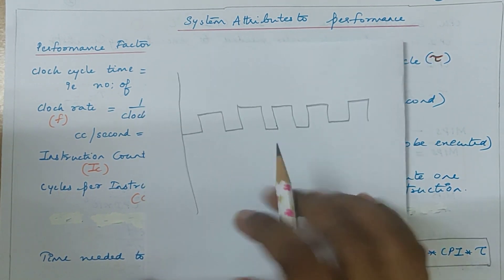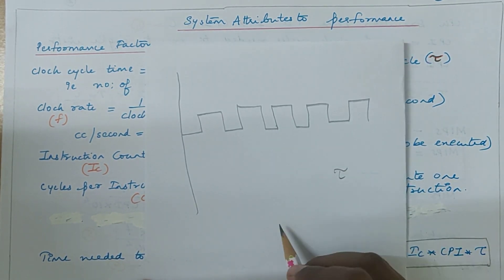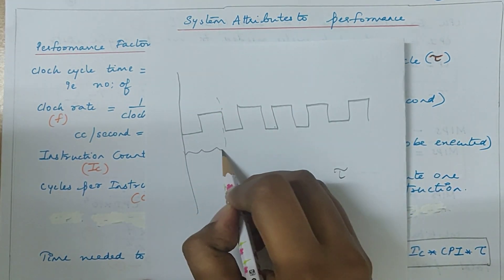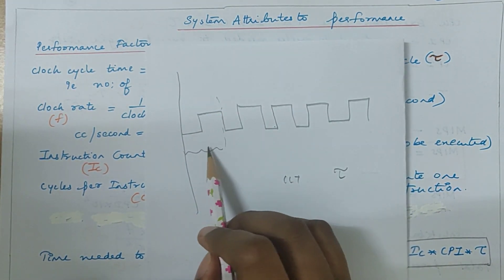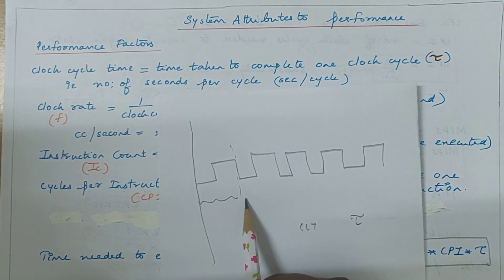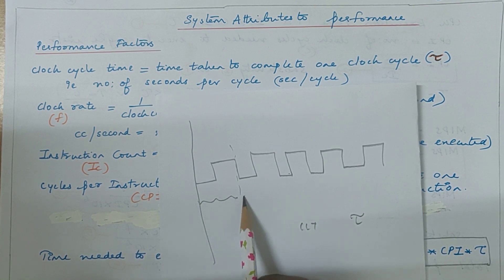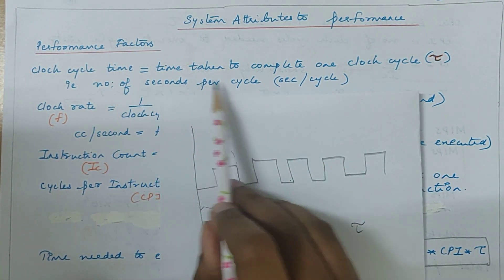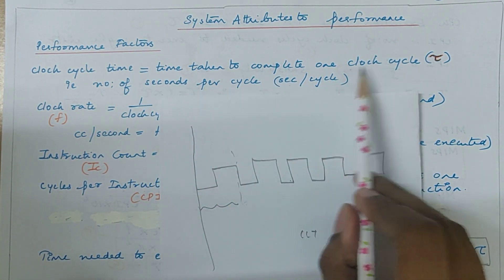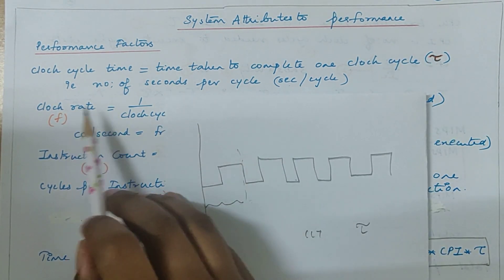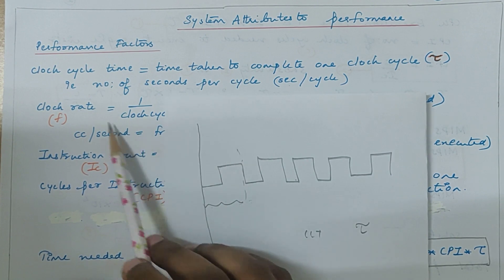You have one term called clock cycle time, denoted by the letter tau. Clock cycle time is the time taken in order to complete one clock cycle — that is, how many seconds per cycle. The number of seconds per cycle is the clock cycle time.